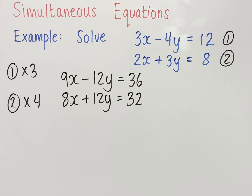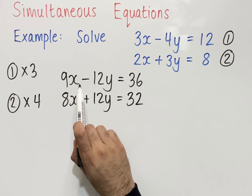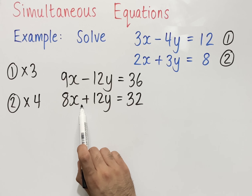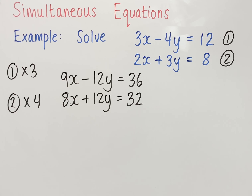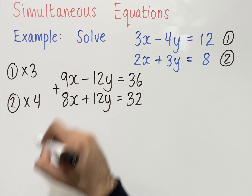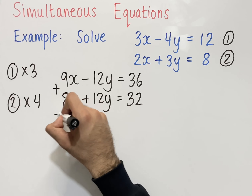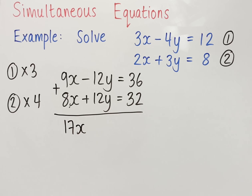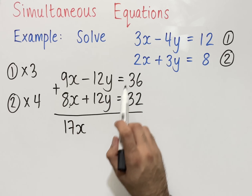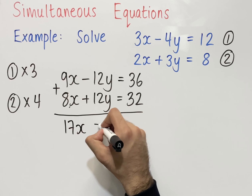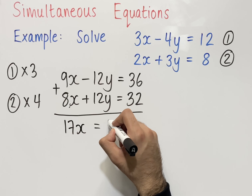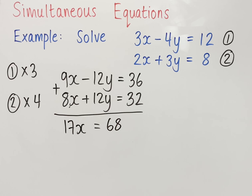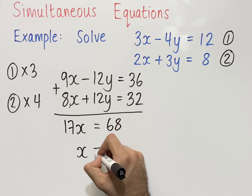The next step is to eliminate the y's. In the first equation we've got minus 12y, and in the second equation we've got plus 12y, so if we add the two equations together the y's will cancel. Adding: 9x plus 8x gives 17x, minus 12y plus 12y cancels, and 36 plus 32 gives 68. So 17x equals 68. Dividing both sides by 17, x equals 4.